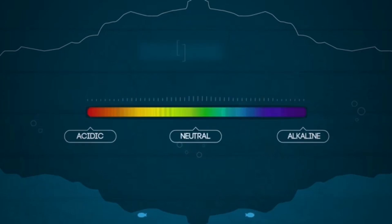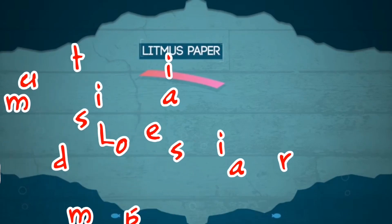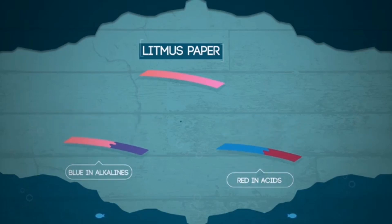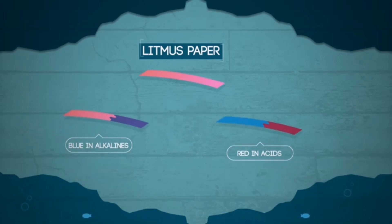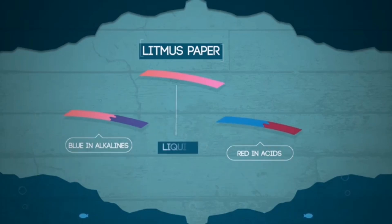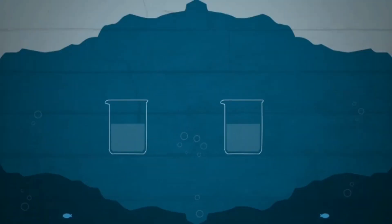Indicators are substances that show different colors when they are in acidic or alkaline conditions. Litmus paper is a simple indicator that tells us whether something is acid or alkaline. Litmus is red in acids and blue in alkalis. It is made from lichens, which have been used to dye cloth for hundreds of years, and it can be used as a liquid or paper.